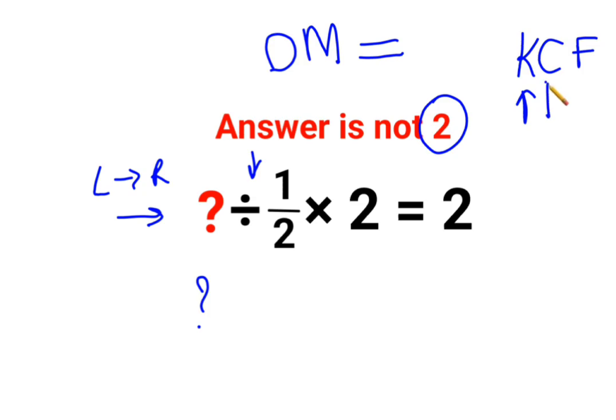C stands for changing the division sign to multiplication. And F stands for flipping or taking reciprocal of 1 upon 2 which is 2 and will continue to write the rest of the question as it is.